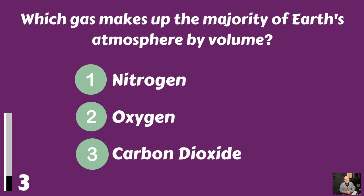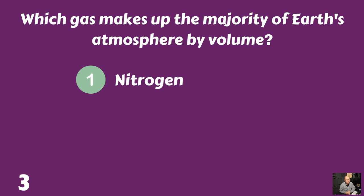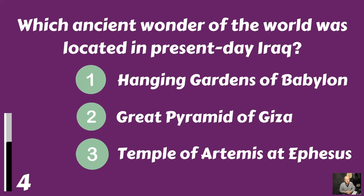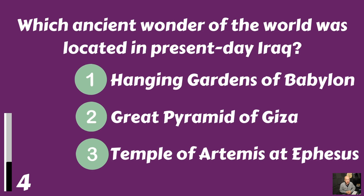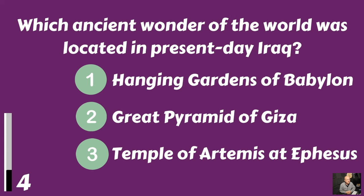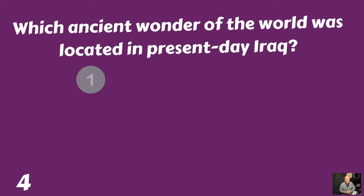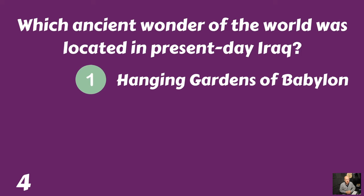Which ancient wonder of the world was located in present-day Iraq? The Hanging Gardens of Babylon, the Great Pyramid of Giza, or the Temple of Artemis at Ephesus? That would be the Hanging Gardens of Babylon.